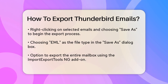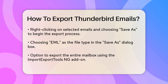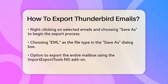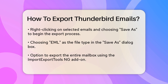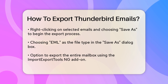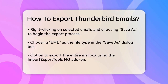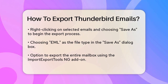Once you've selected your emails, right-click on one of the selected emails and choose Save As from the context menu. In the Save As dialog box, select EML as the file type. You can choose a location on your computer to save these files and give the folder a name like "exported emails."